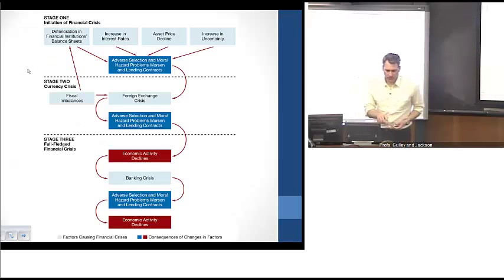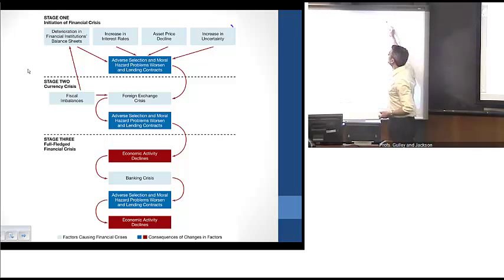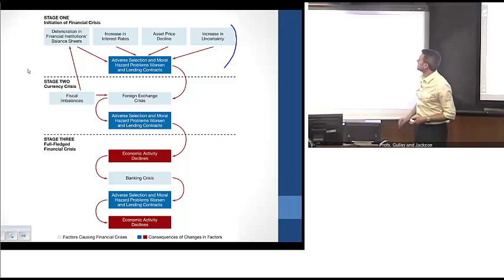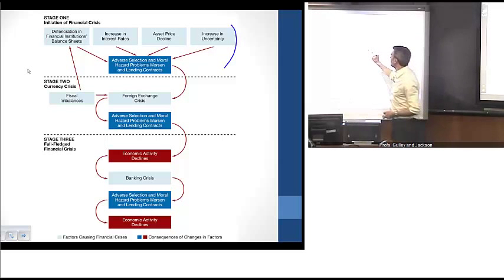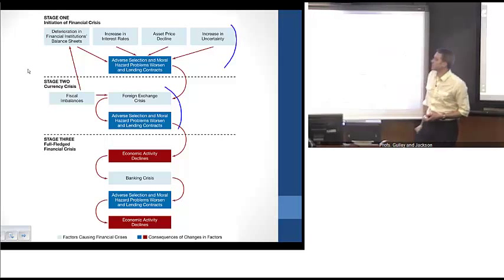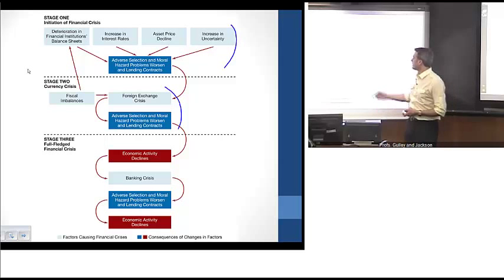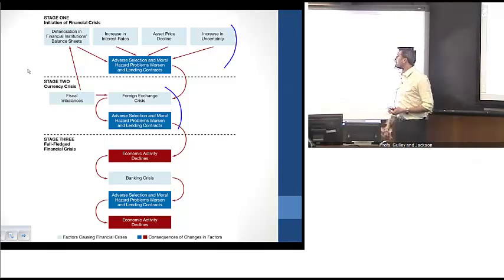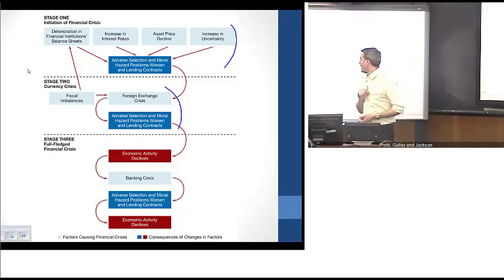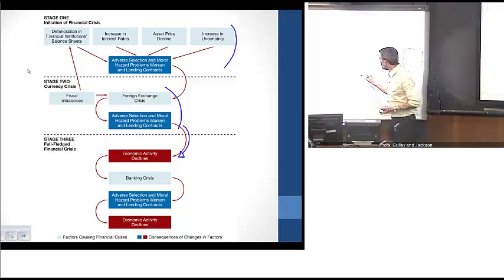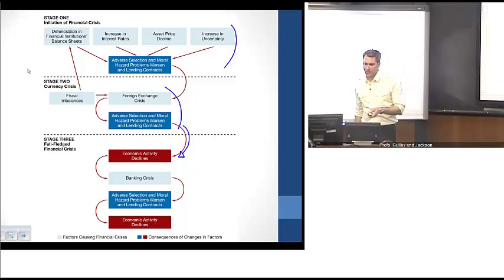In summary, emerging market countries have triggers that lead to currency crises — foreign exchange crises through speculative attacks — which generate adverse selection and asymmetric information problems, typically through the international capital lens, leading to the third stage: a full-fledged financial and banking crisis. Thank you.